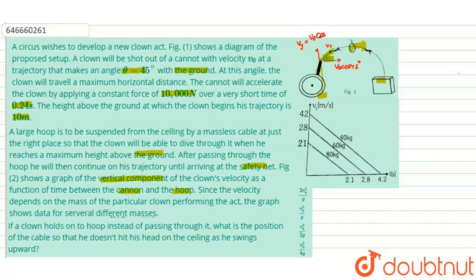Graph 2 shows the variation of v_y versus time between the cannon and the hoop. As the body moves upward, it starts with some initial vertical velocity at the cannon, and as it reaches the hoop its vertical velocity becomes zero. For different masses these graphs will be different, as mentioned in the question.